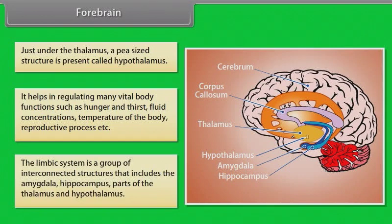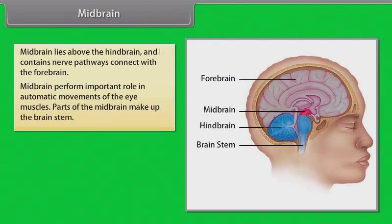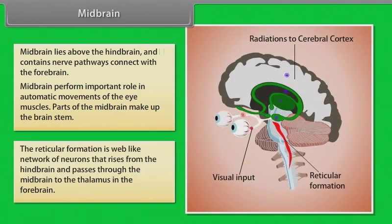The limbic system is a group of interconnected structures that includes the amygdala, hippocampus, and parts of the thalamus and hypothalamus. The midbrain lies above the hindbrain and contains nerve pathways connected with the forebrain. It performs an important role in automatic movements of the eye muscles, and parts of the midbrain make up the brain stem.